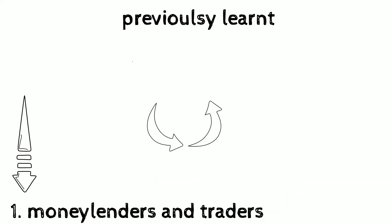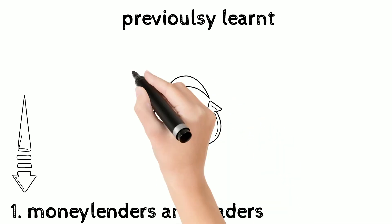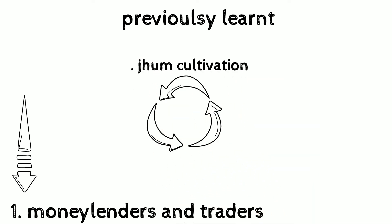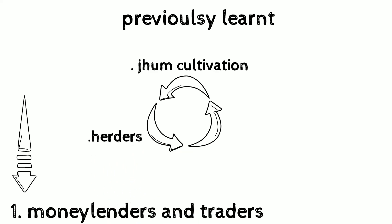This led to the miserable condition of tribals. There were three means of livelihood of tribals. The first was jhum cultivation, also known as shifting cultivation, where tree tops were cut, vegetation was burnt, seeds were scattered, and then the crops were reaped and the land was left fallow for several years.